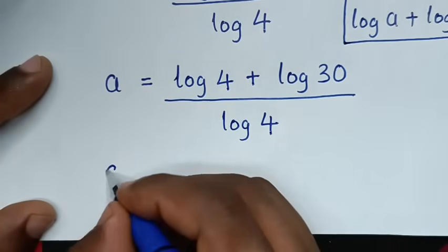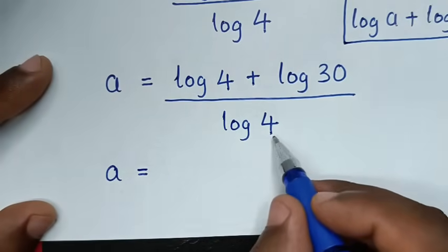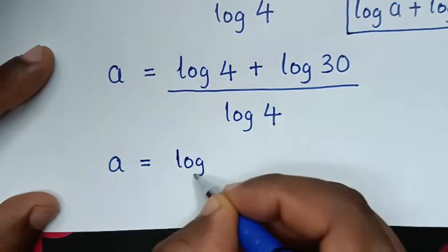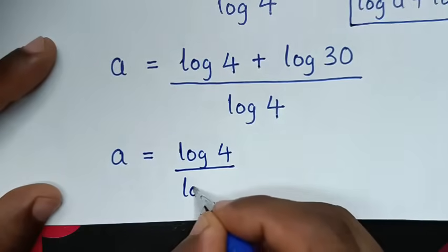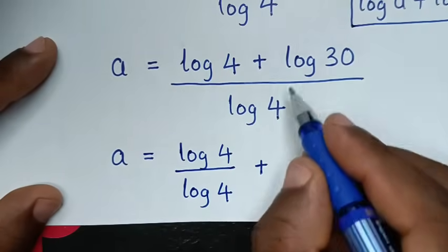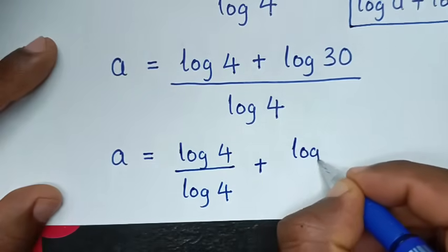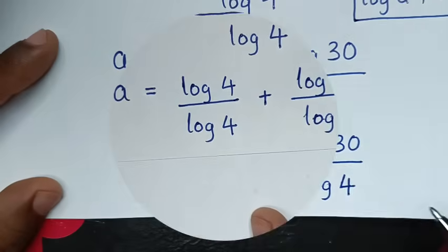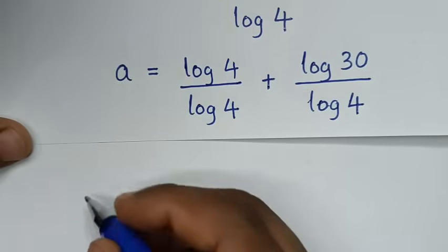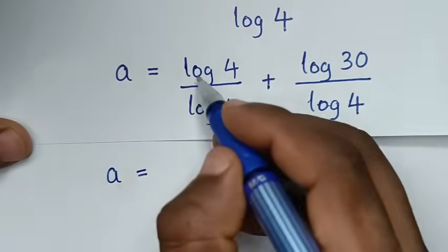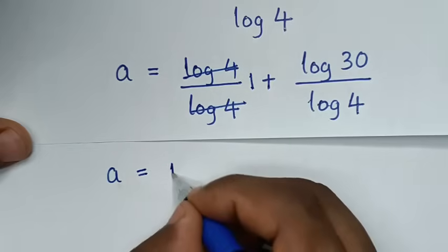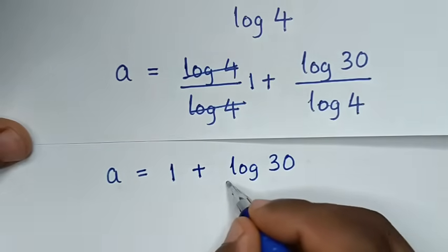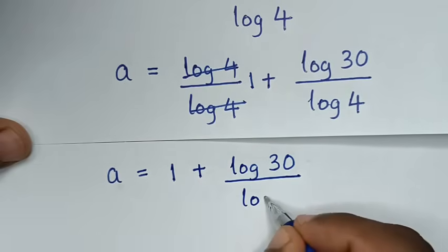In the next step, we divide each term by log of 4. So it becomes log of 4 over log of 4 plus log of 30 over log of 4. Then a is equal to 1 plus log of 30 over log of 4.